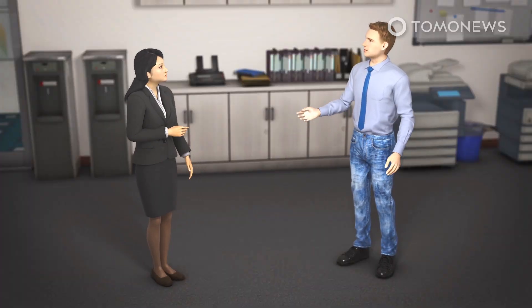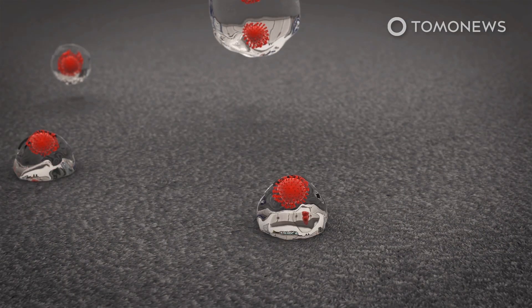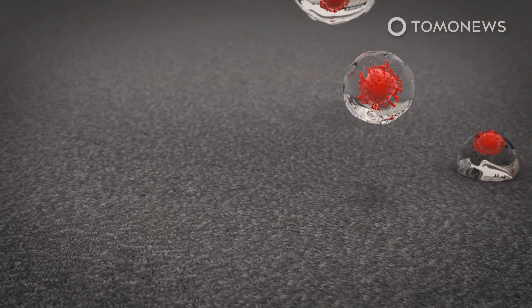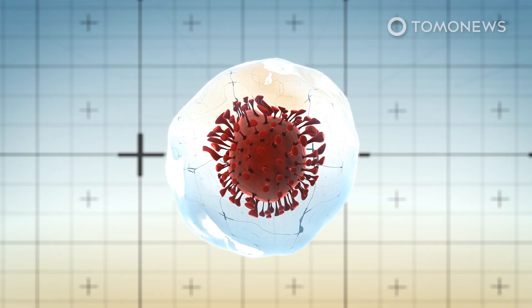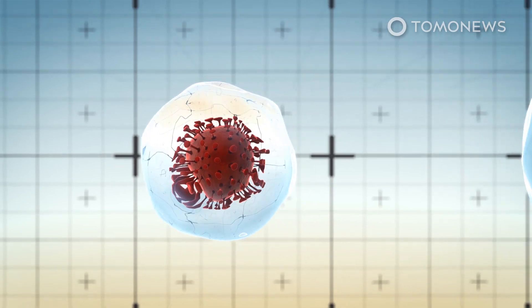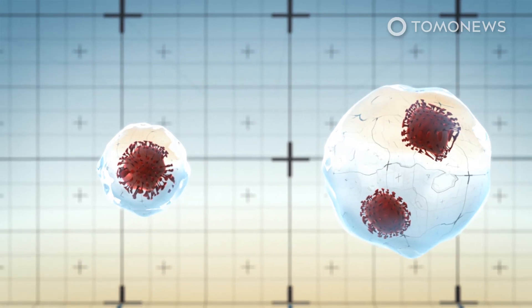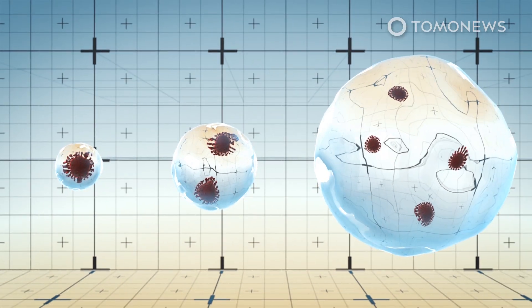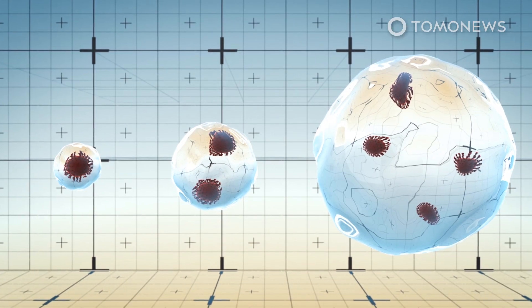The authors of the review suggest that an overemphasis on spread through large respiratory droplets at close range could mean public health policies have been misdirected. In scientific briefings made available on its website, the WHO defines aerosols as being less than 5 micrometers in diameter and respiratory droplets as being greater than 5 micrometers in diameter.